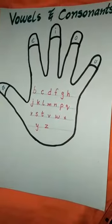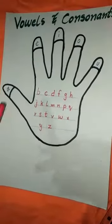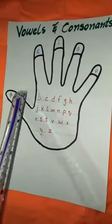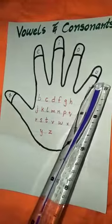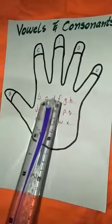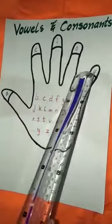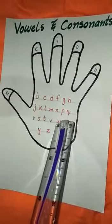Students, you can see there are five vowels. How many vowels? A, E, I, O, U. And all letters other than vowels are called consonants.